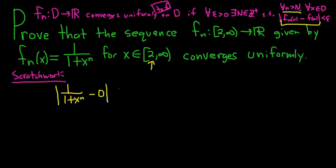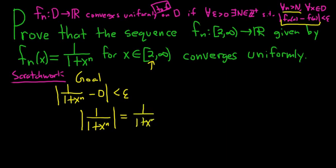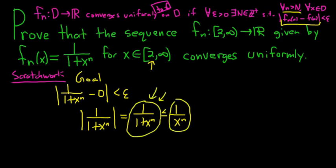Our goal is to make this less than epsilon. Anything minus zero is itself, so we have one over one plus x to the n. We don't need the absolute values because x is a positive number. We can say this is less than or equal to one over x to the n, because we can drop the one — one plus x to the n is bigger than x to the n, so the bottom is bigger and we get a less than or equal to.